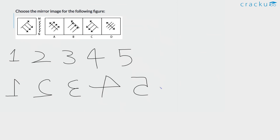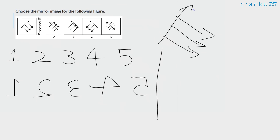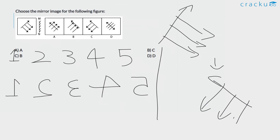The same happens with figures also. Using this principle, we can find the answer. The question image has arrows towards the right side. Therefore, the answer figure will have arrows towards the left side. The upside image will remain at the top and the downside image will remain at the bottom — only the right and left change. Therefore, the answer is option B.